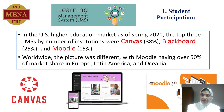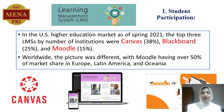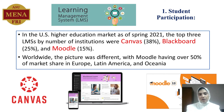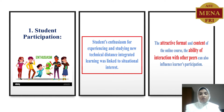In the United States, for the higher education market of spring 2021, the top three learning management systems were Canvas — used by Harvard — Blackboard, and Moodle. Worldwide, Moodle has over 50% of the market share in Europe, Latin America, and even in Egypt, where many university portal systems are based on Moodle. The attractive form and content of online courses and the ability to interact with peers are very important to enhance student participation.